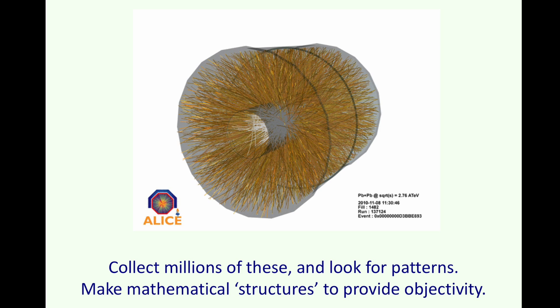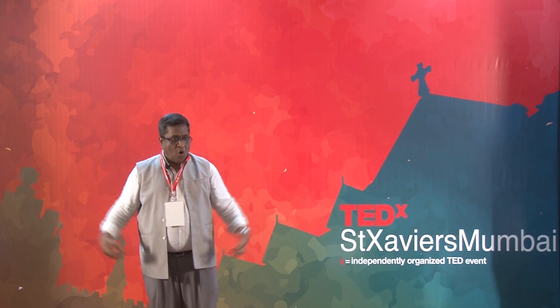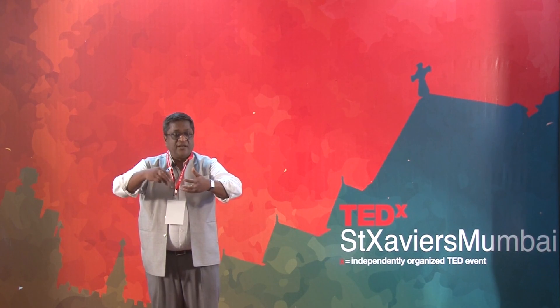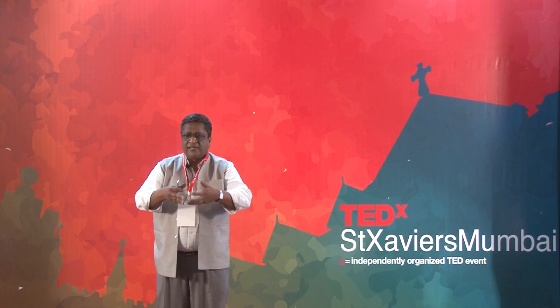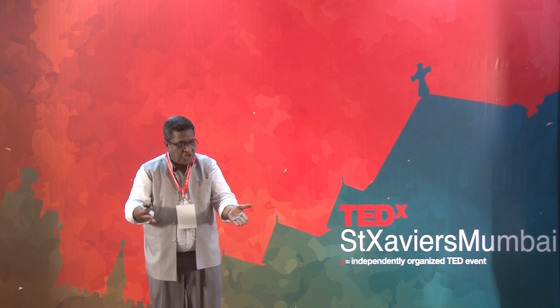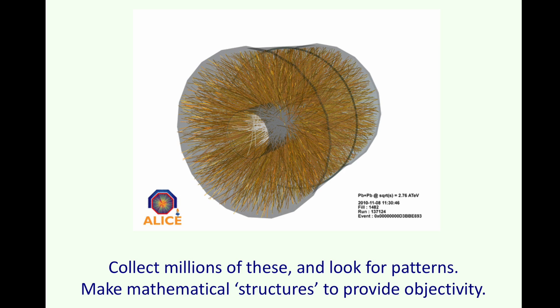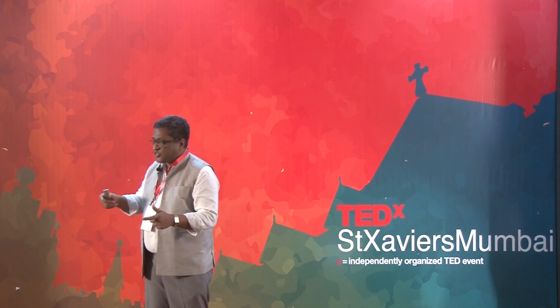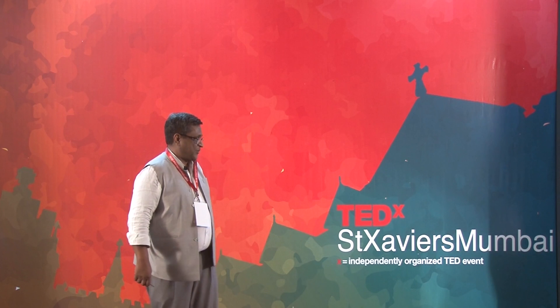The yellow lines are all different particles. Do you see any pattern in this figure, or is it just random? The answer is: not only is there a pattern, but it is the same pattern that every other physicist in the world will observe. To find that pattern requires a lot of intuition and hard work. So we collect millions of these events, look for patterns, and provide a mathematical structure to that pattern so that everybody in the world agrees.